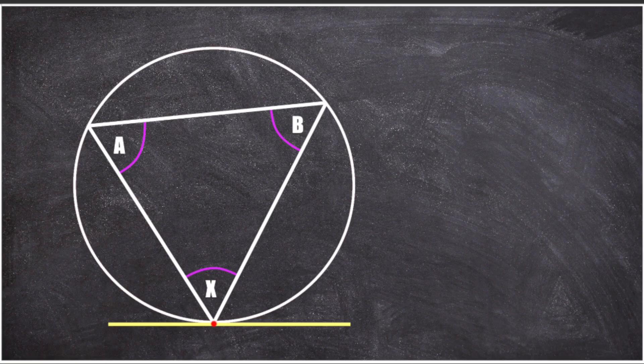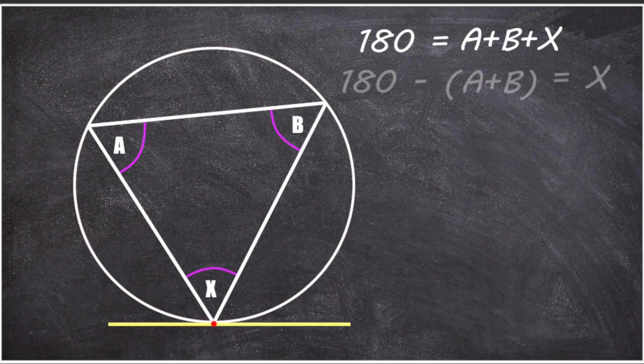I want to express x in terms of a and b, which will come in handy later. The sum of angles in a triangle is 180 degrees, so 180 degrees equals a plus b plus x. To get x in terms of a and b, we subtract a and b from both sides, giving us x equals 180 degrees minus (a plus b).